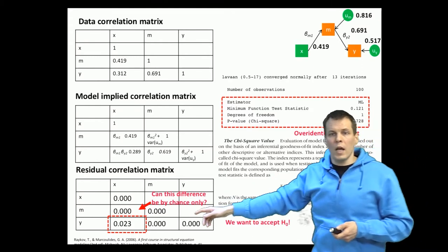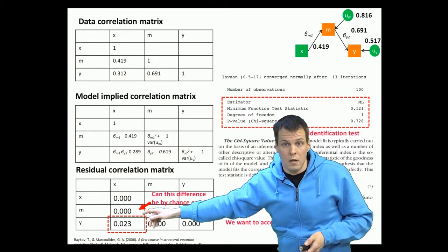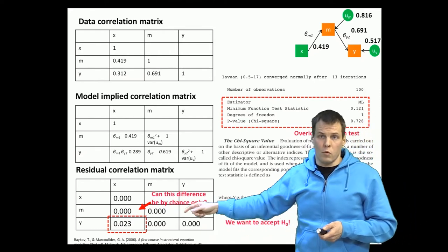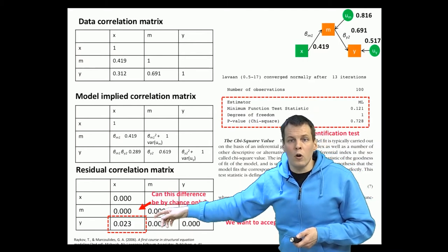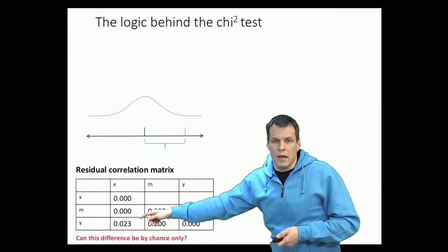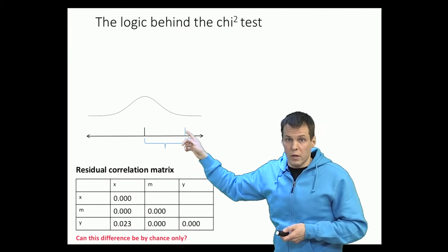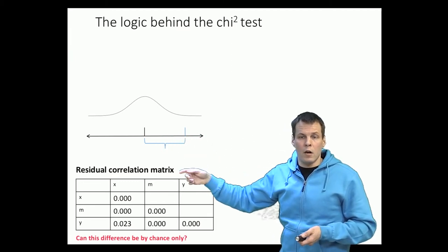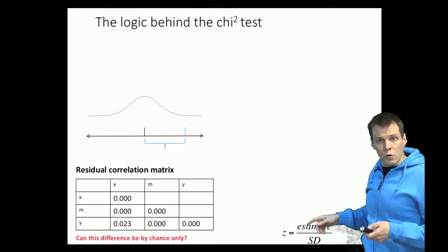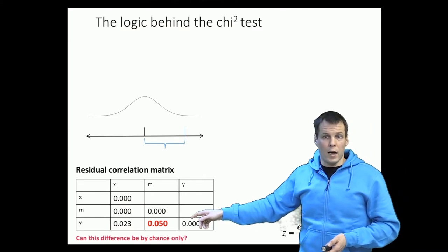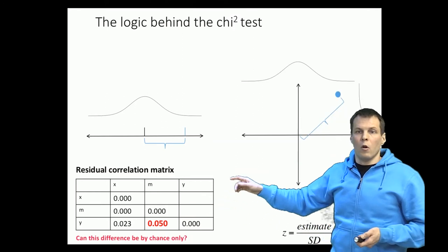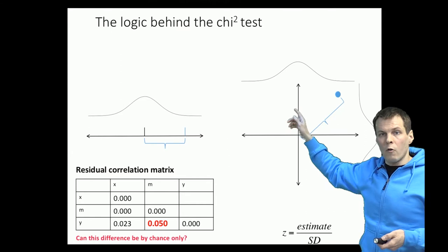Here we have just one residual statistic, so we could compare it against an appropriate normal distribution. However, for more complex models there are typically more than one non-zero elements in the residual correlation matrix. When two cells differ from zero, we need to test that both are zero simultaneously — looking at a two-dimensional plane and assessing how far both estimates are from zero.